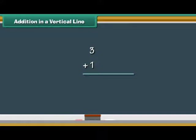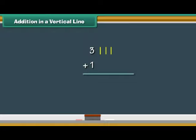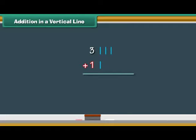What is three plus one? Write the two numbers one below the other. Draw three vertical lines next to three and one vertical line next to one. Count the vertical lines: one, two, three, four. Therefore, three plus one is four.